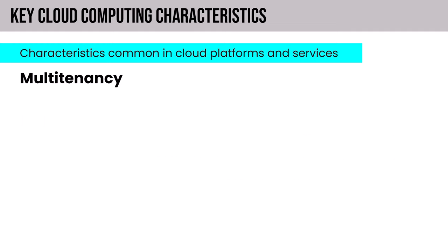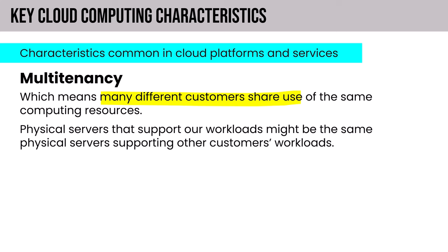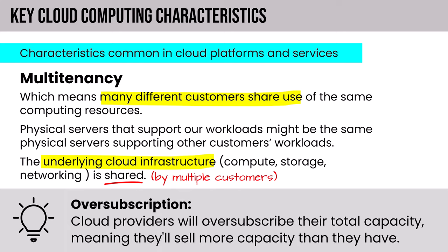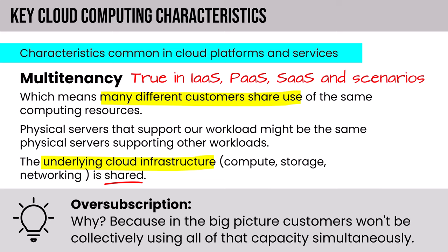Multi-tenancy means many different customers share use of the same computing resources. Physical servers that support our workloads might be the same servers supporting other customers' workloads — compute, storage, and networking are all shared. You should also be familiar with oversubscription: cloud providers sell more capacity than they actually have because customers won't collectively use all of that capacity simultaneously. This is true in IaaS, PaaS, and SaaS scenarios, though the level of CSP responsibility varies across those models.